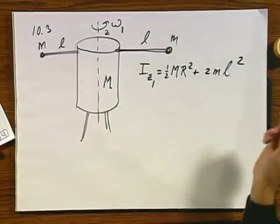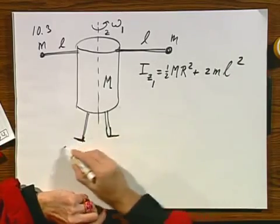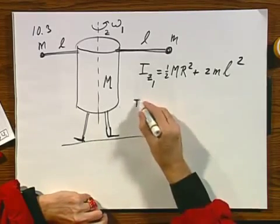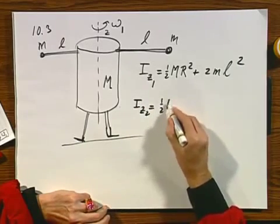Now the person pulls her arms in. Let's assume that she is not cheating and that there are no external torques here at the ice, which I'm not so sure about at all. And so I'm going to get an I_z2, which is again one half MR squared.